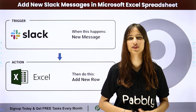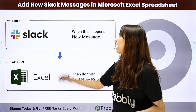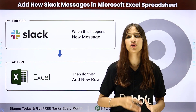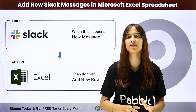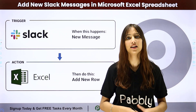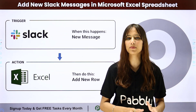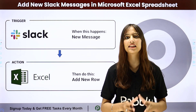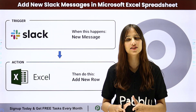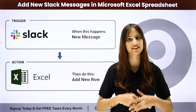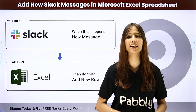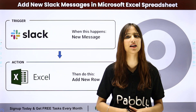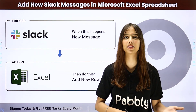Hello everyone, welcome back to Pabbly. In today's video we are going to understand how to add new Slack messages in Microsoft Excel spreadsheet. My objective is that I have created a channel on Slack, and whenever a team member sends a message in that channel, the user detail and the message should automatically be added in my Microsoft Excel spreadsheet. To do this, I need to build a connection between these two applications using Pabbly Connect.